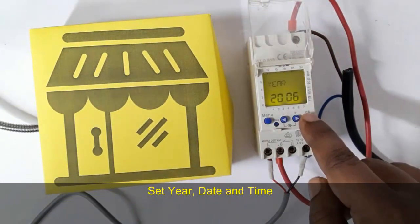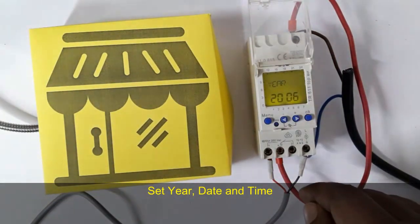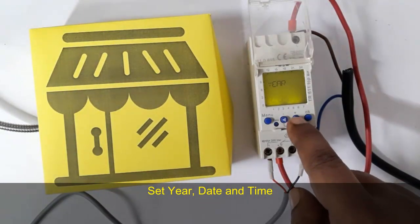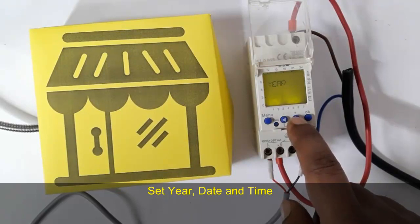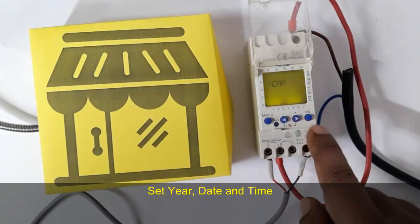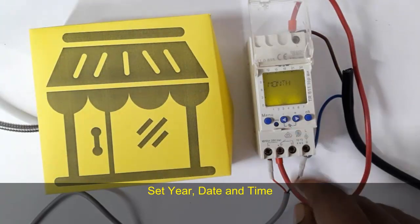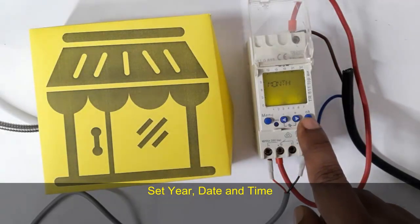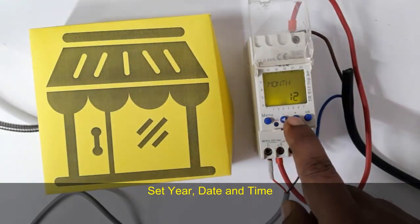Now set year, date and time. The programming timer uses this date and time to control the load or lighting. We want to control the billboard or shop or your house lighting or system.